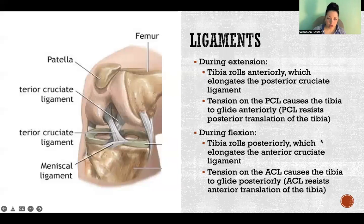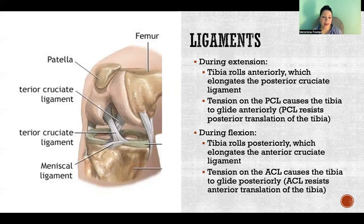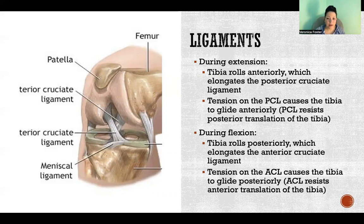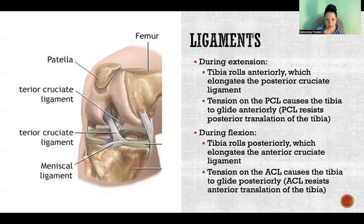During extension, as we're approaching full extension, the tibia rolls anteriorly. This happens naturally due to the shape of the condyles. When that happens, it causes the PCL — the posterior cruciate ligament — to elongate. When the PCL is elongated, it puts tension on the tibia and causes the tibia to glide anteriorly. One of the roles of the PCL is to resist posterior translation of the tibia, so it pulls the tibia in the anterior direction. The rolling occurs because of condyle shape, and the tension on the PCL causes glide to also take place.